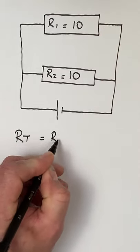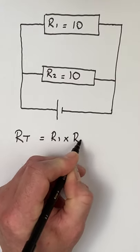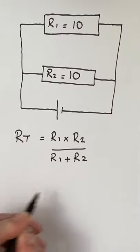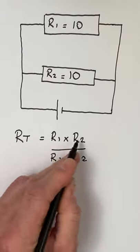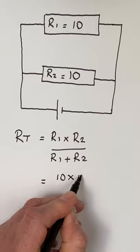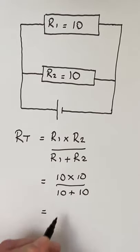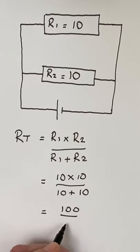We would use R1 multiplied by R2 over R1 plus R2 - product over sum. So that would give us a total resistance of 10 times 10 over 10 plus 10, giving us 100 divided by 20.